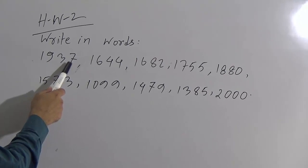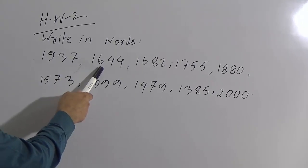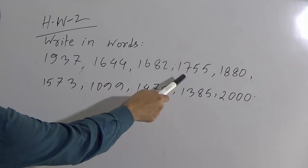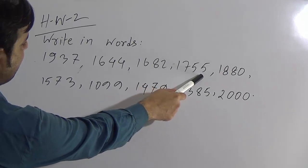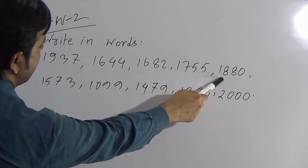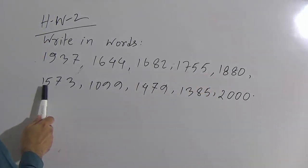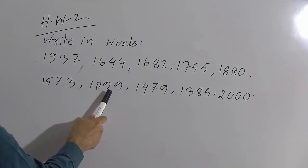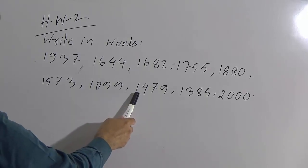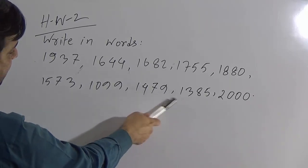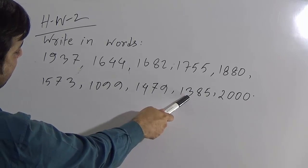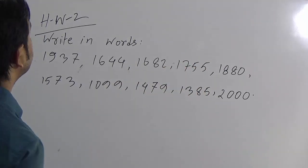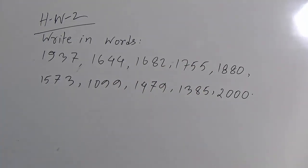The homework numbers are: 1937, 1644, 1682, 1755, 1880, 1573, 1099, 1479, 1385, and the last one is 2000.